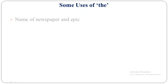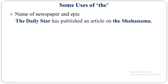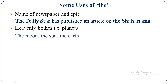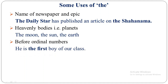Name of newspaper and epic: for example, 'The Daylister has published an article on the Shahanama.' Here Daylister is the name of a newspaper and Shahanama is the name of an epic, so we must put THE before both. Heavenly bodies like planets: the moon, the sun, the earth. Before ordinal numbers: 'He is the first boy of the class' — here first is an ordinal number, so we must use THE before first.